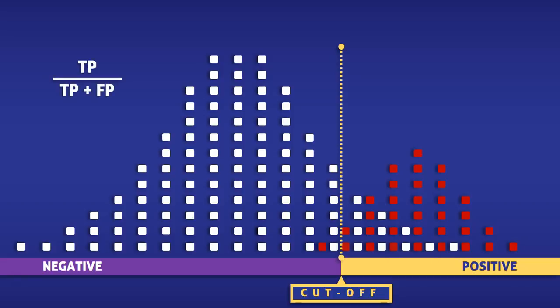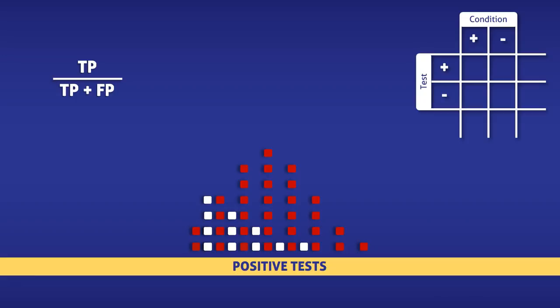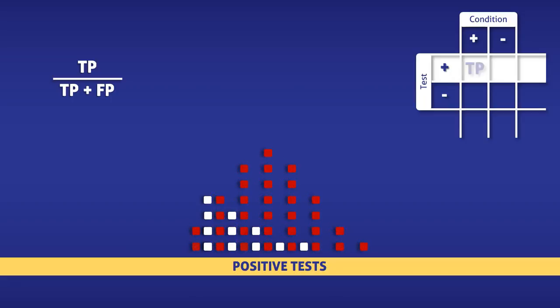Since the positive predictive value only takes into consideration positive tests, we are going to focus on the squares to the right of the yellow line. Now let's take a moment to look at the sample table in the top right corner. When calculating the positive predictive value, we only need to use the top row. This row is used for people who tested positive. In the left box, we have the true positives; in the middle box, the false positives; and on the right, the total number of positive tests.